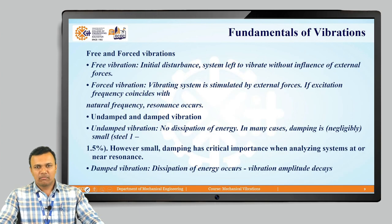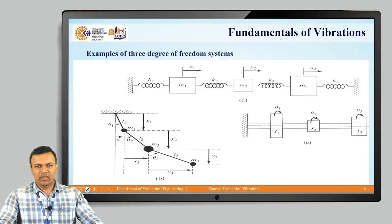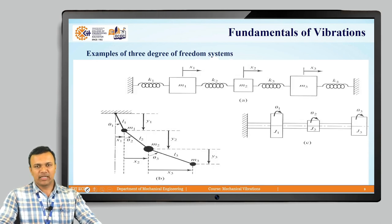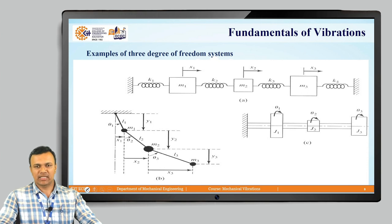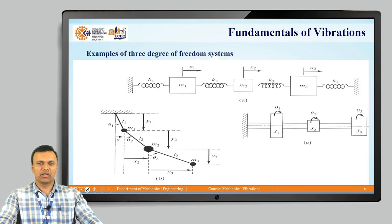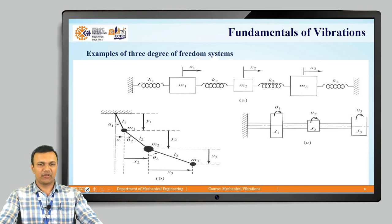An approximate way to find the degrees of freedom of a system is that the number of masses present in the system gives you the number of degrees of freedom associated with it.